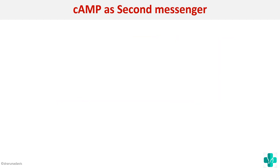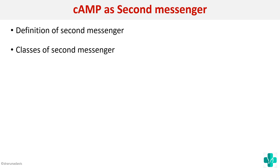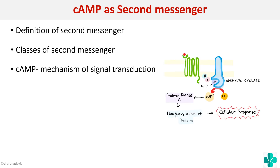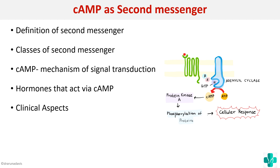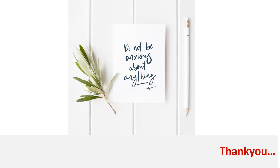To conclude, when you get a short note like cAMP as a second messenger, you can start with the definition of second messengers, write the different classes of second messengers, then write about cAMP — including the mechanism of signal transduction with a diagram, the hormones that act via cAMP, and some clinical aspects. I hope this concept is clear. Thank you and all the best.